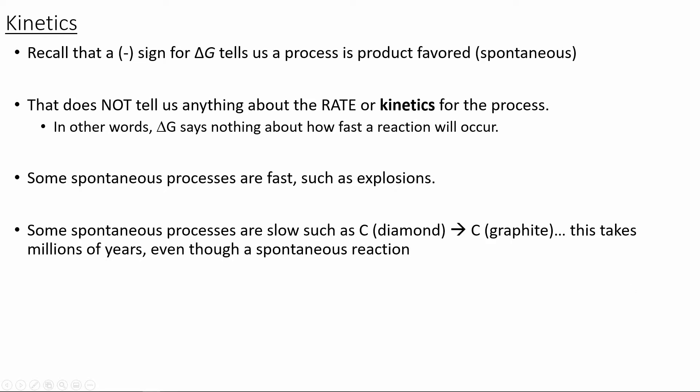The sign of the delta G tells us if a process is going to be favored — is the process spontaneous? But what it doesn't tell us anything about is the rate at which the reaction occurs. In order to look at the rate, we're going to need to look at the kinetics process. Some spontaneous processes occur very fast, like an explosion; some are extremely slow, such as a diamond transitioning to graphite over time, which might take millions of years even though it's spontaneous. For the next segment, we're going to look at the different factors that affect the kinetics or the rate of a reaction occurring.